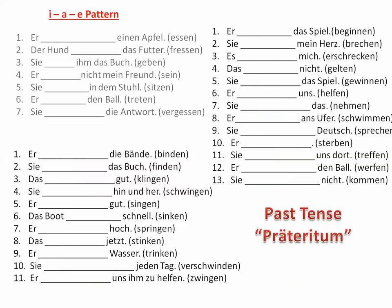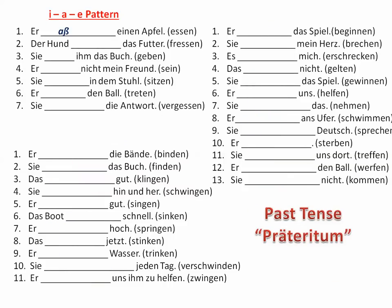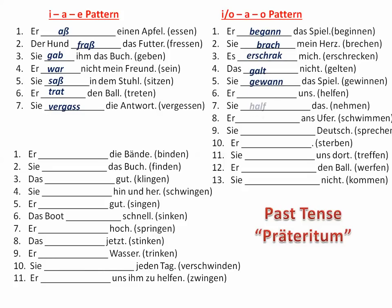Now let's look at the simple past tense. Group 1 changes to an A: er aß den Apfel; der Hund fraß das Futter; sie gab ihm das Buch; er war nicht mein Freund; sie saß in dem Stuhl; er trat den Ball; sie vergaß die Antwort. Group 2: er begann das Spiel; sie brach mein Herz; er erschrak mich; das galt nicht; sie gewann das Spiel; er half uns; sie nahm das; er schwamm ans Ufer; sie sprach Deutsch; er starb; sie traf; er warf; sie kam.